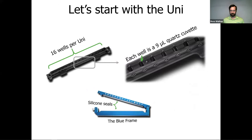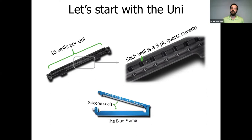UNCLE uses a unique sample holder called the UNI. A UNI contains 16 wells that are actually 9-microliter quartz cuvettes. You can use anywhere from one to all 16 of these wells during an experiment. Before an experiment, the UNI is clamped between two silicone gaskets, sealing either end, and held within a blue frame. This keeps your sample safe and secure during the experiment, and is what gives you the high throughput and low volumes that are so important for AAV stability work.